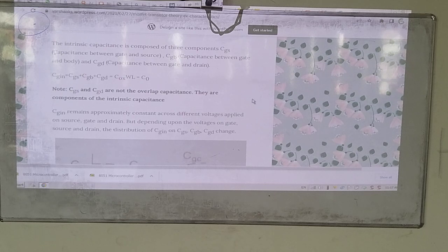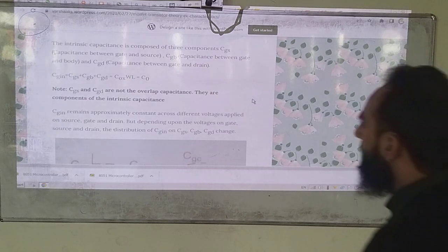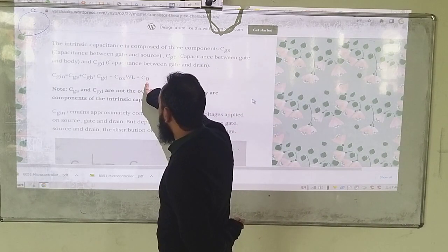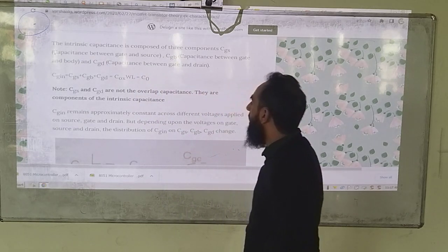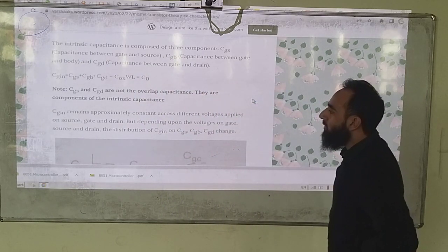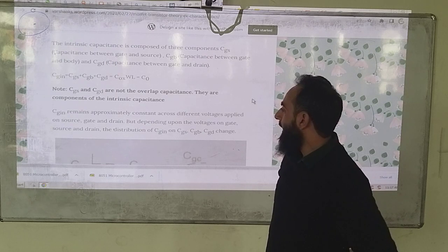So it is denoted by C0 because it generally remains constant. Cgin generally remains constant across different voltages applied.